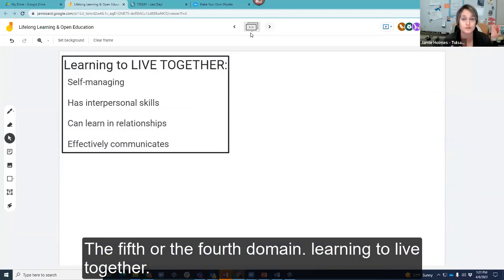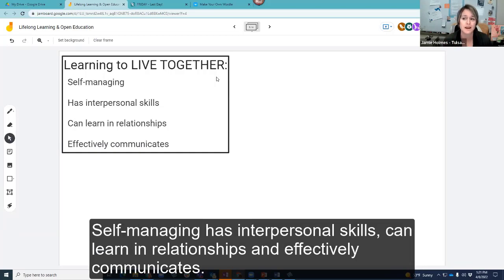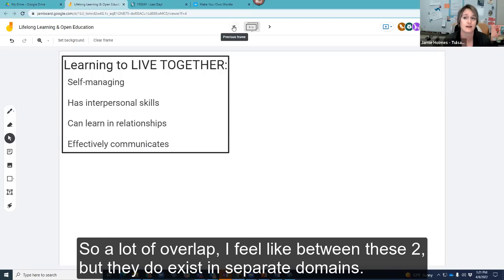The, the fifth or the fourth domain, learning to live together, self-managing, has interpersonal, interpersonal skills, can learn in relationships and effectively communicates. So a lot of overlap, I feel like, between these two, but they do exist in separate domains.